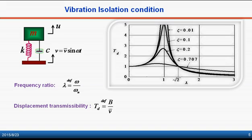This figure shows the relationship between the displacement transmissibility and the frequency ratio. As shown in this figure, to effectively isolate vibration, frequency ratio has to be greater than the square root of 2. As the ratio increases, the system becomes increasingly more efficient in isolating vibration.